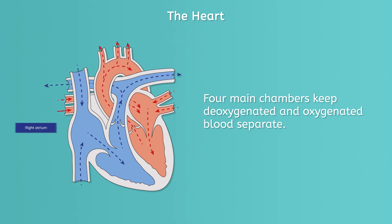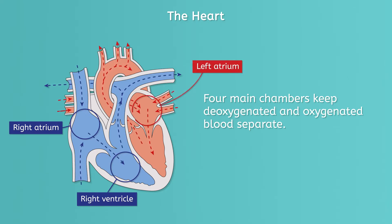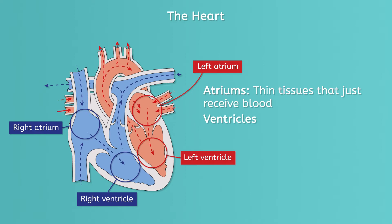Deoxygenated blood enters the right atrium of the heart and flows into the right ventricle. The right ventricle pumps the blood to the lungs to grab some oxygen. After receiving oxygen, the blood returns to the heart. The blood enters the left atrium and flows into the left ventricle, which pumps the blood out to the rest of the body. The atriums of the heart are thin tissues that just receive blood, but the ventricles are much thicker and actually pump the blood.